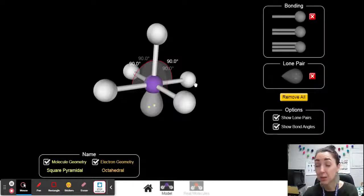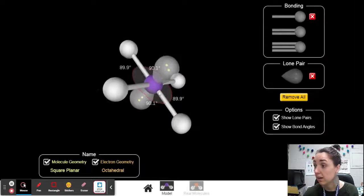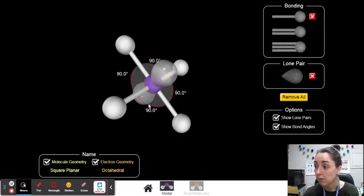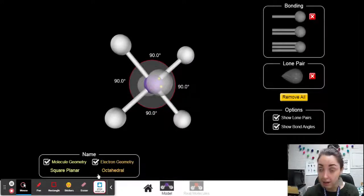So molecule geometry is going to be a little more specific. So if I wanted to ditch another one of these and add another electron pair, you can see it's still an octahedral geometry. But now my molecule geometry is square planar.